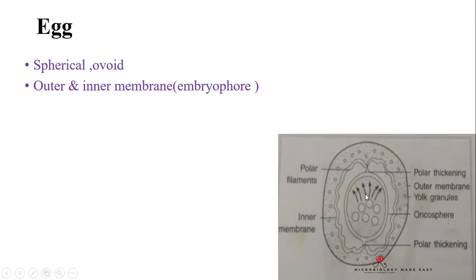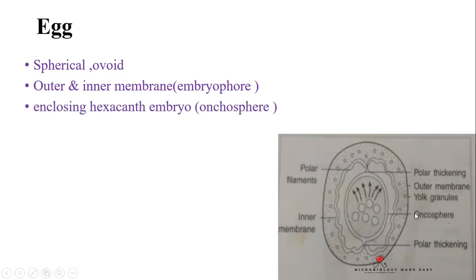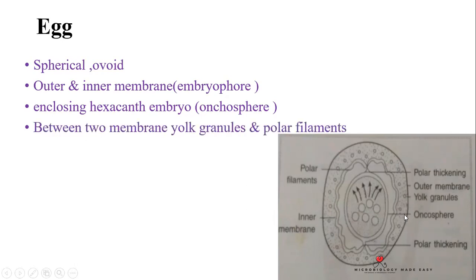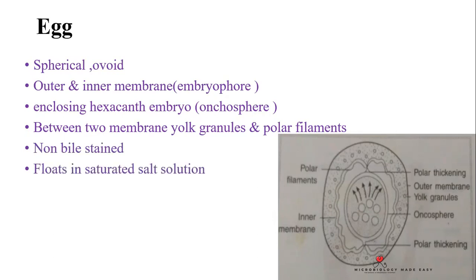The inner membrane has polar thickening, and inside are the oncospheres, which is a hexacanth embryo also called an oncosphere. Between the two membranes there are polar granules or polar filaments. Notably, the egg does not stain with bile stain and floats in saturated salt solution.